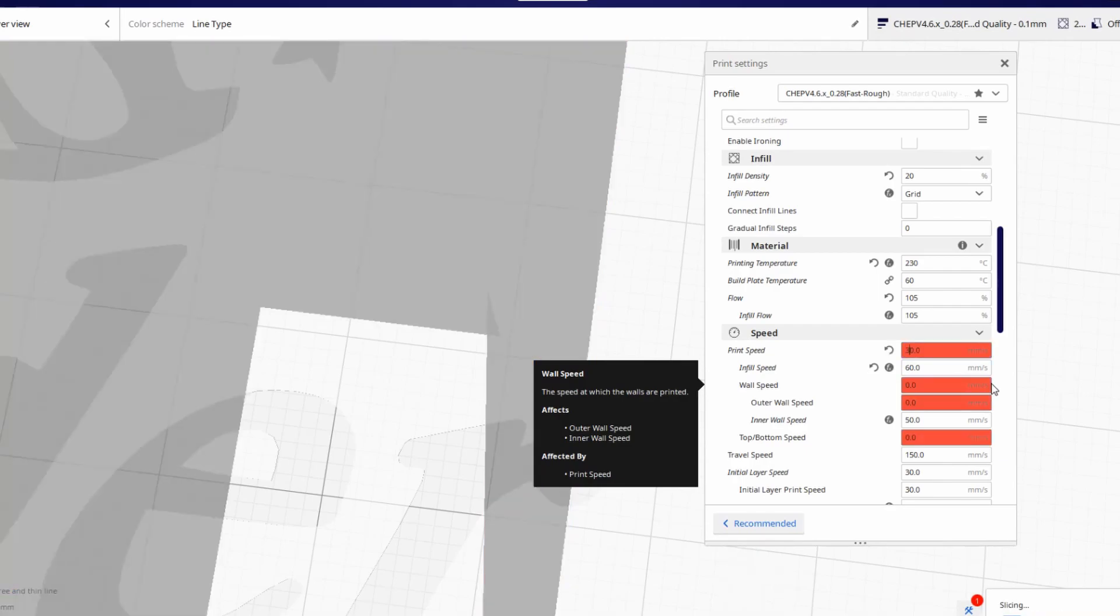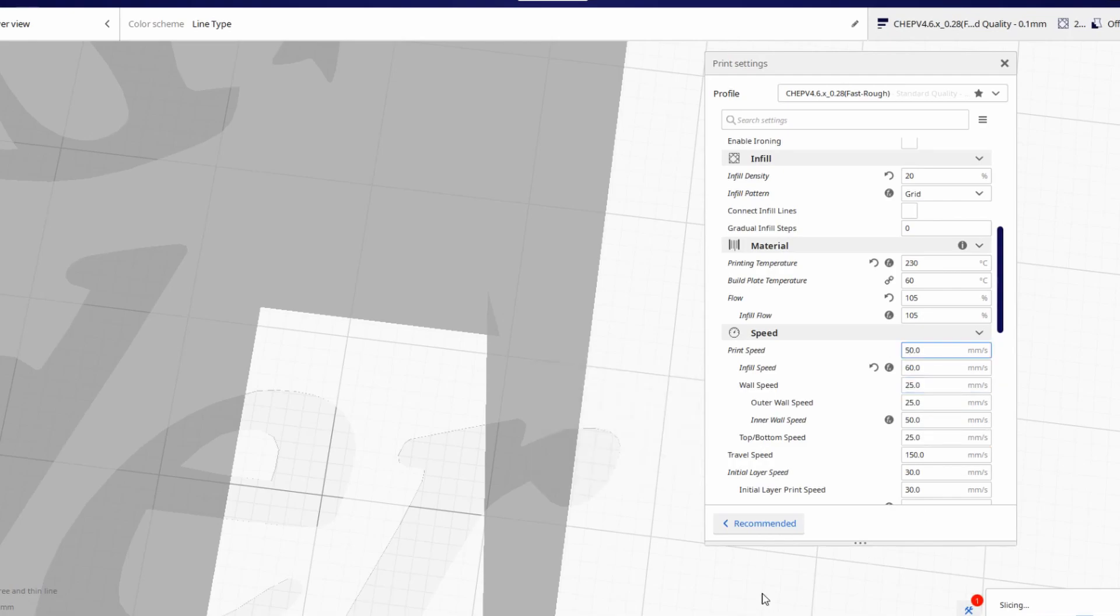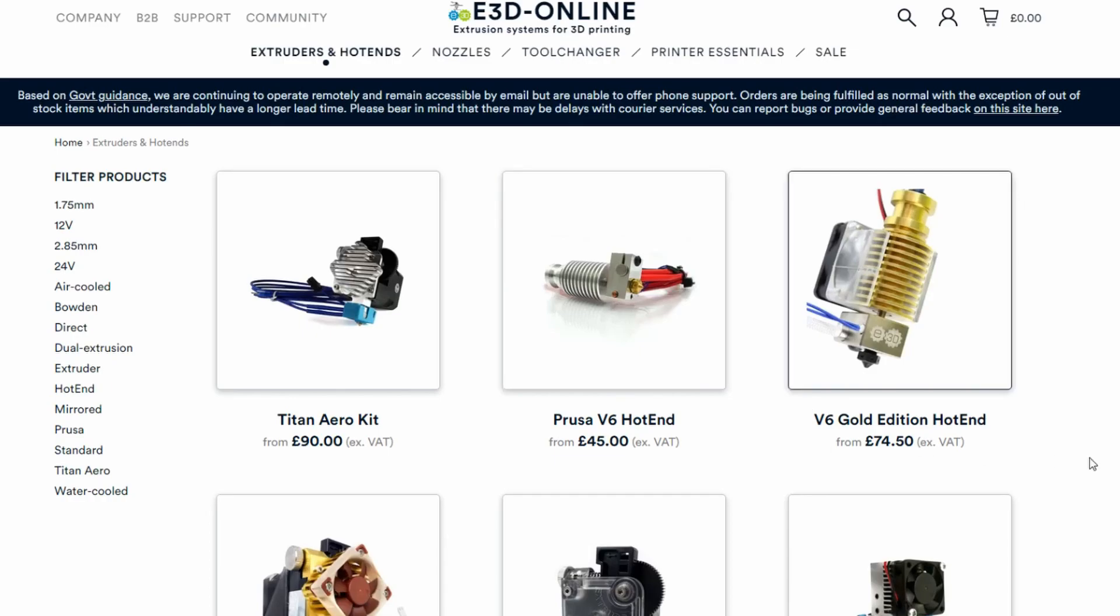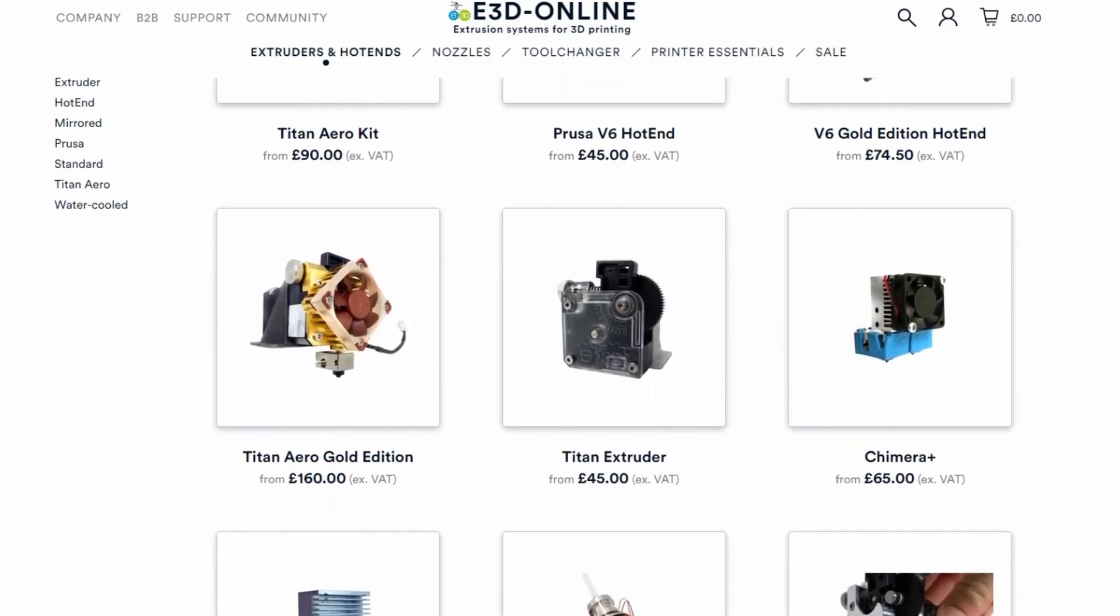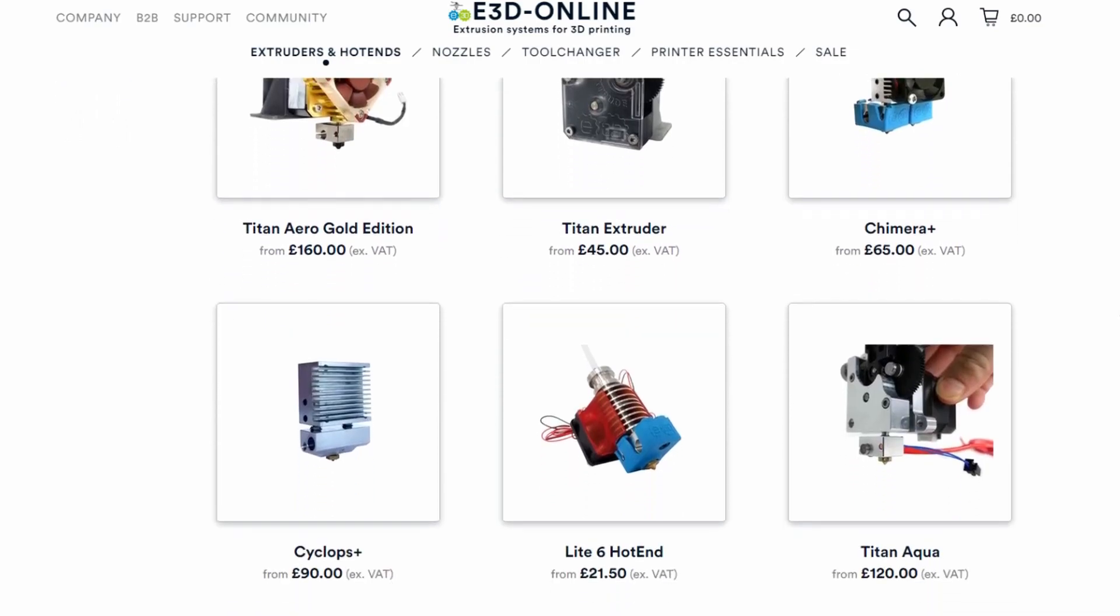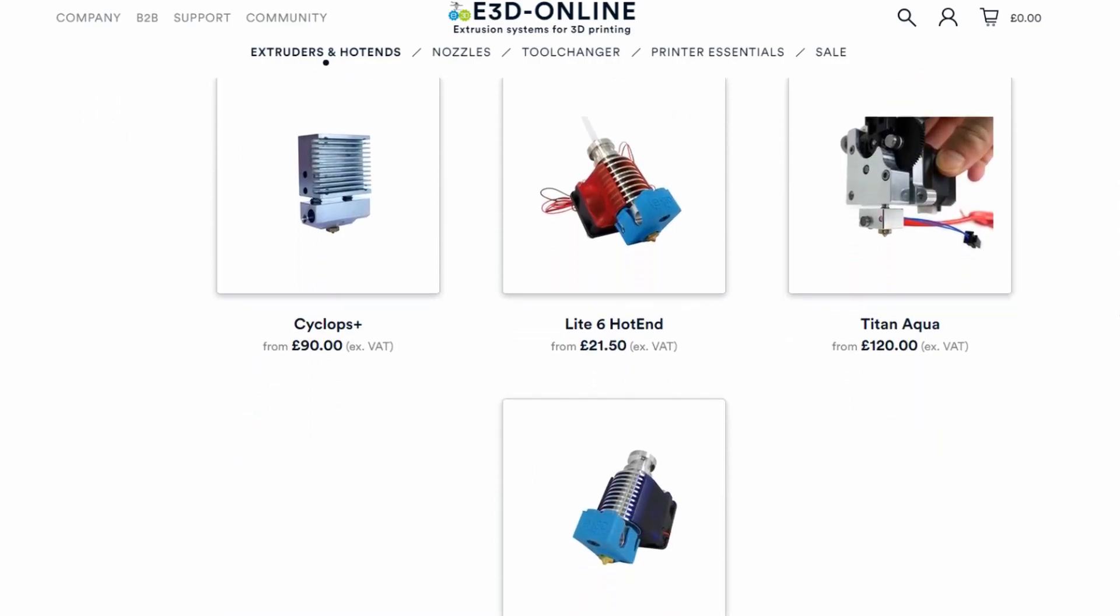I print fine with 50mm per second with my stock Ender 3. You could also change the hotend. There are a few to choose from on the market, just make sure it will fit your 3D printer. However, I would recommend against it if you're a beginner.